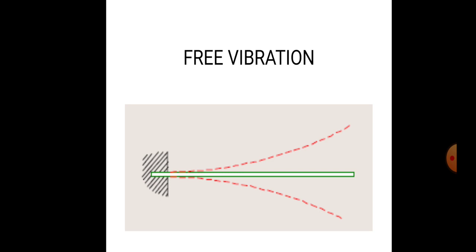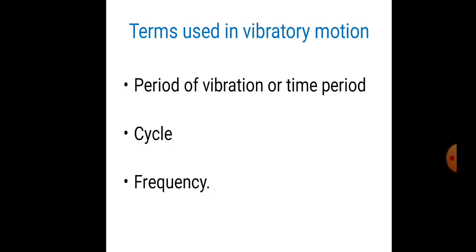There are two extreme motions of the body in free vibrations. The terms used in vibratory motions include: period of vibration or time period, which is the time for one complete vibration; cycles, which is the number of cycles to consider; and frequency, which is the number of cycles per unit time.